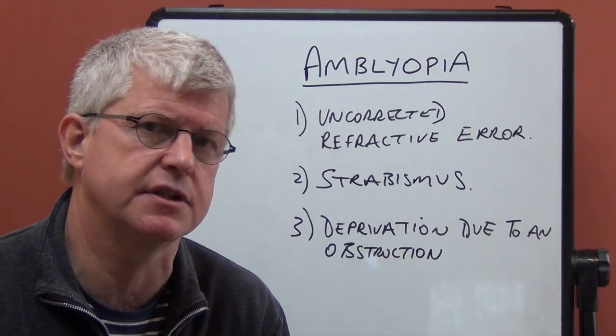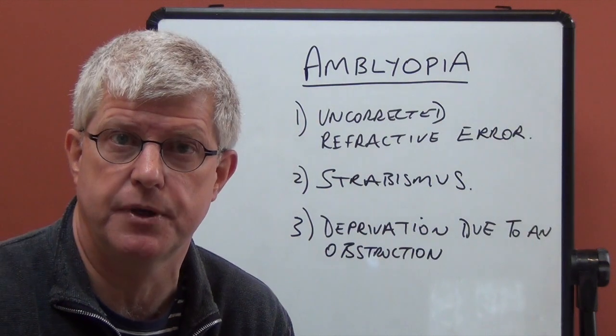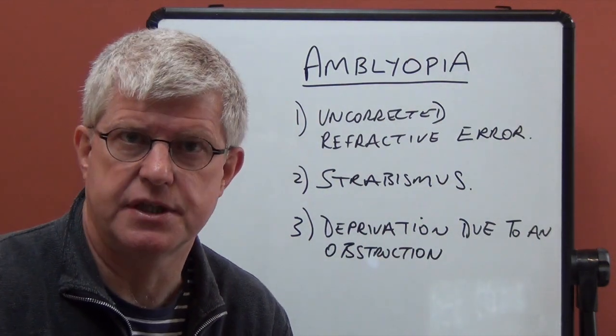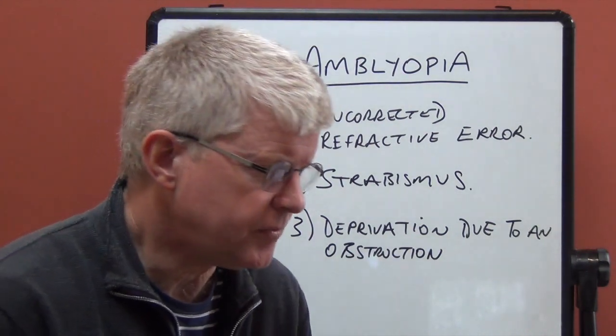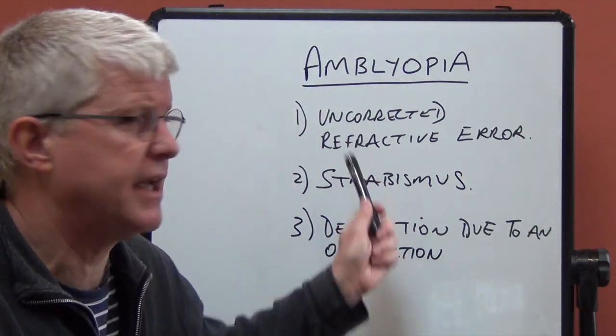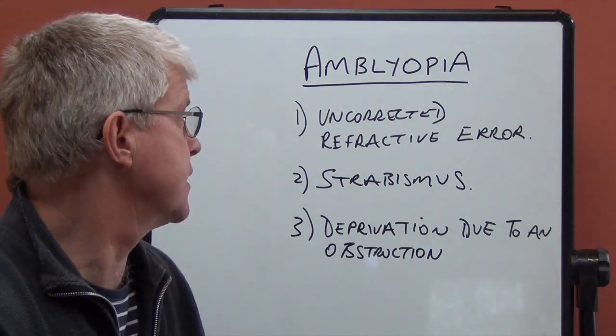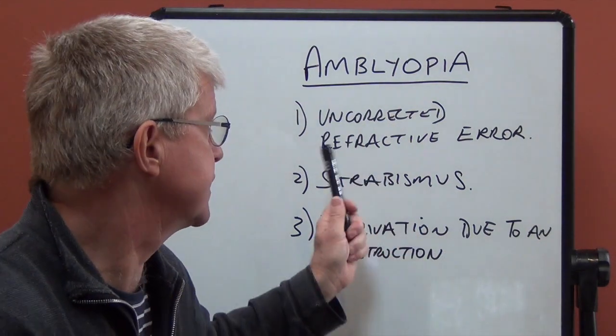And we're going to go through the various causes of amblyopia and some of the treatments that can be done to help avoid it. Now, we've got three main categories of causes for amblyopia. The most common one being uncorrected refractive error, which is what this video is going to be dealing with to begin with.